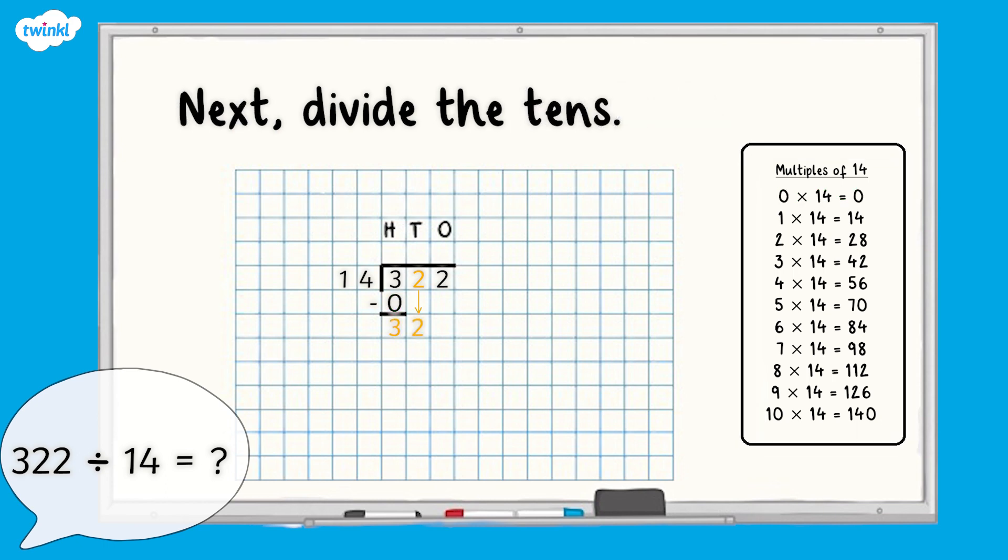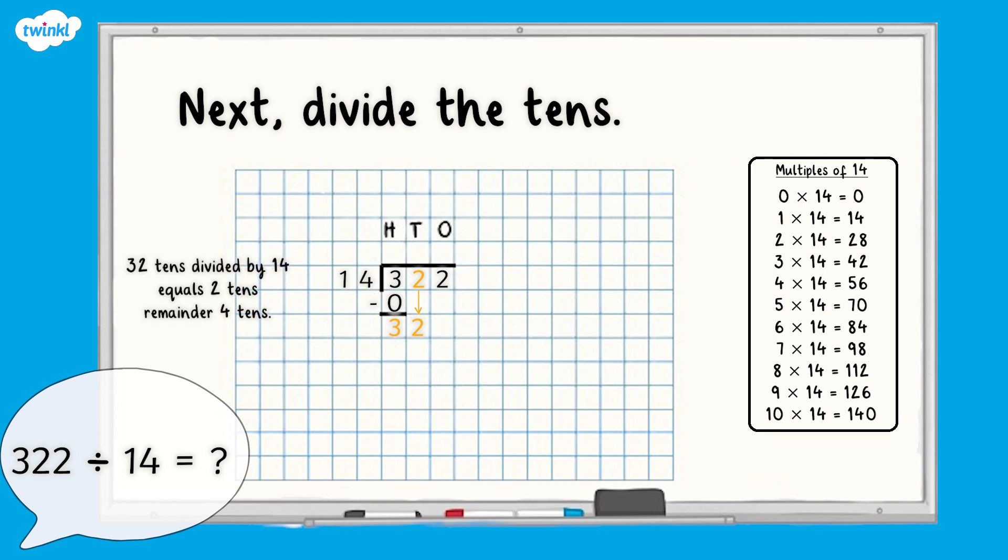If we look at our multiples of 14, we can see that 32 tens divided by 14 equals two tens because two lots of 14 equals 28 and we have a remainder of four tens. We write the two in the tens column of the answer above the line. When we subtract the 28 tens we have shared equally from the 32 tens we started with, we have four tens remaining.